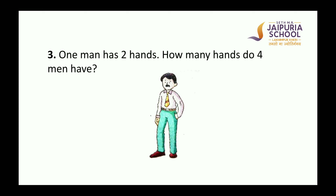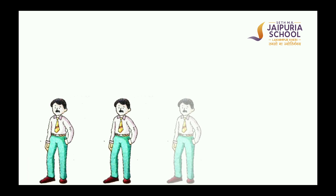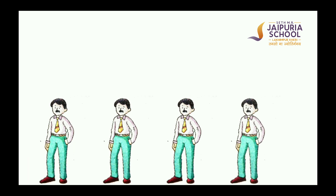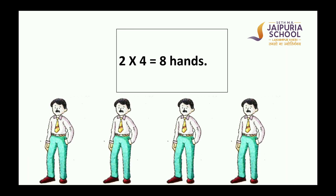Let's solve another word problem. One man has 2 hands. How many hands do 4 men have? Let's solve this word problem with the help of pictures. Now let's arrange the men: 1, 2, 3, 4. Now we have 4 men. As we know that each man has 2 hands, so we can say 2 taken 4 times is 8. So 4 men have 8 hands.